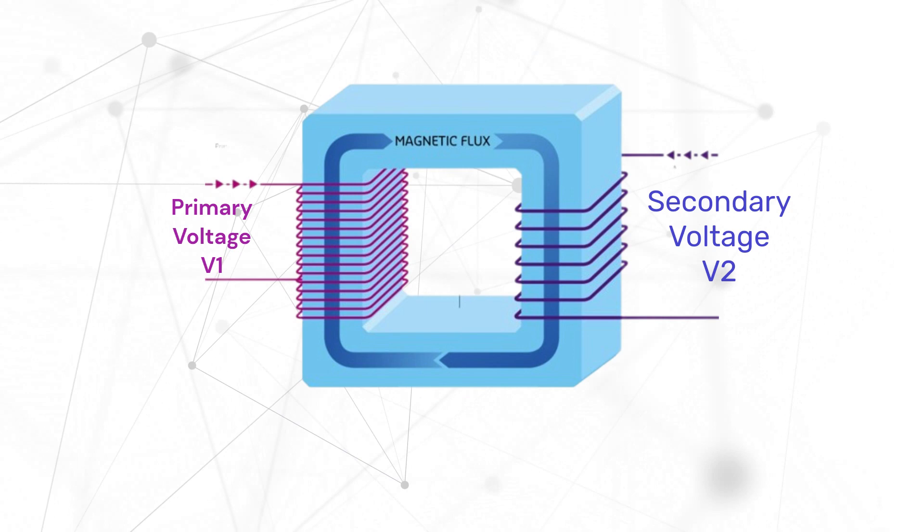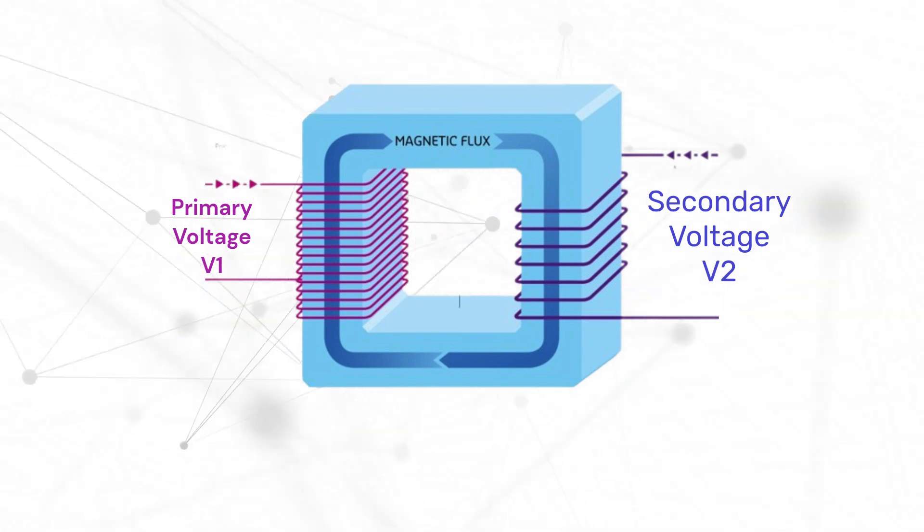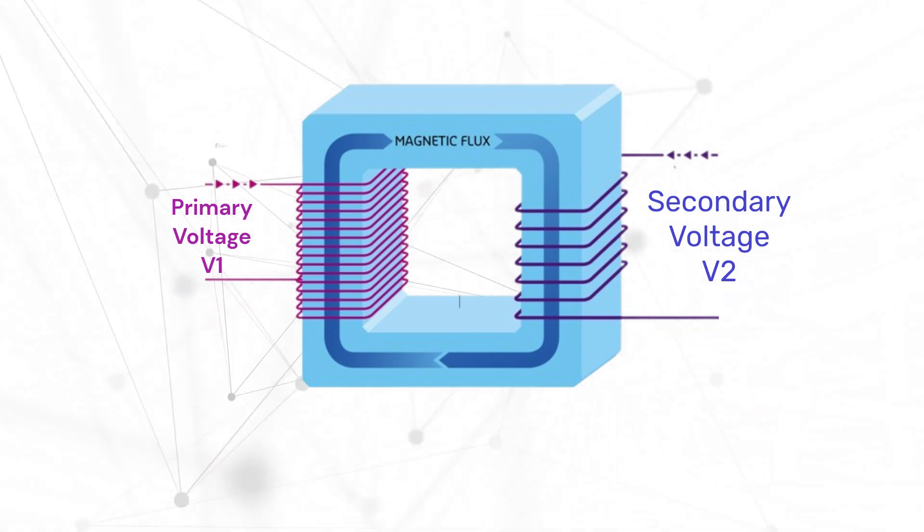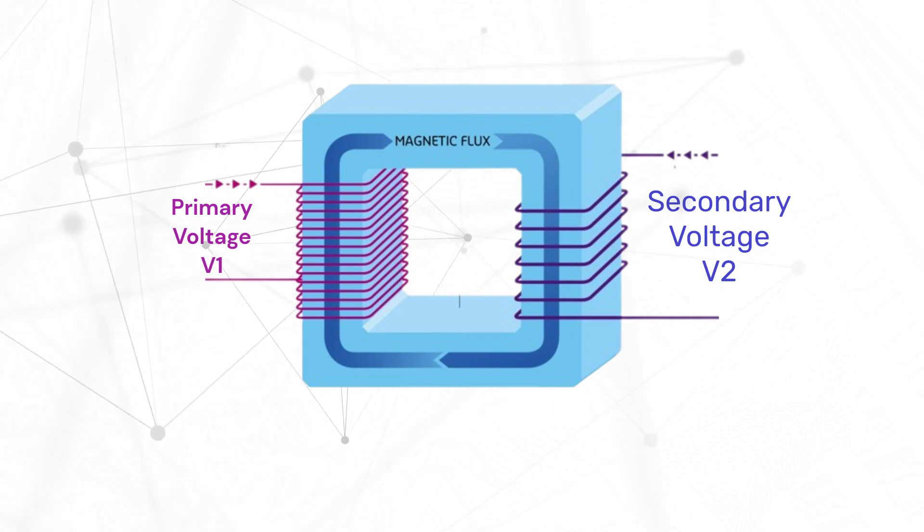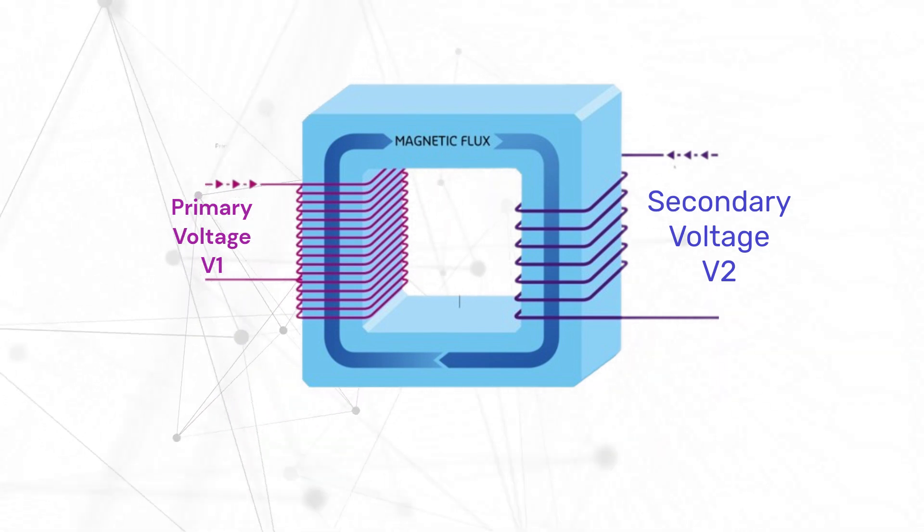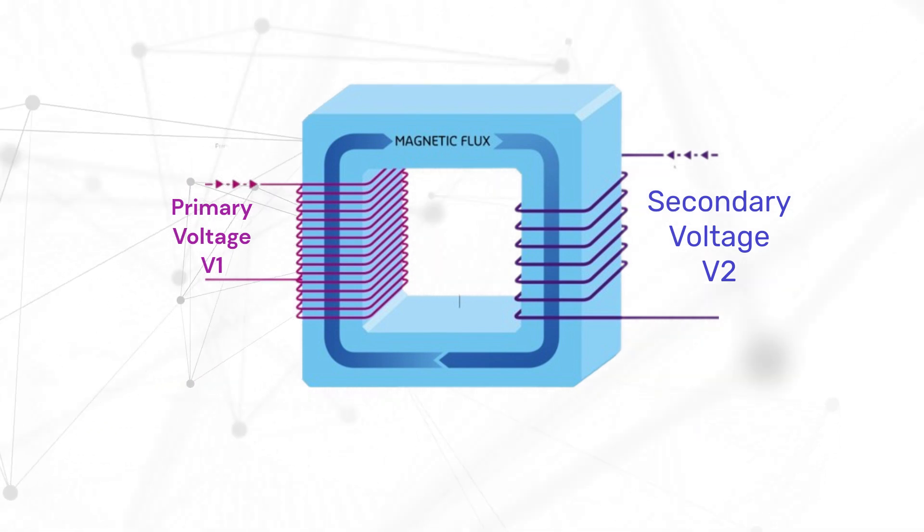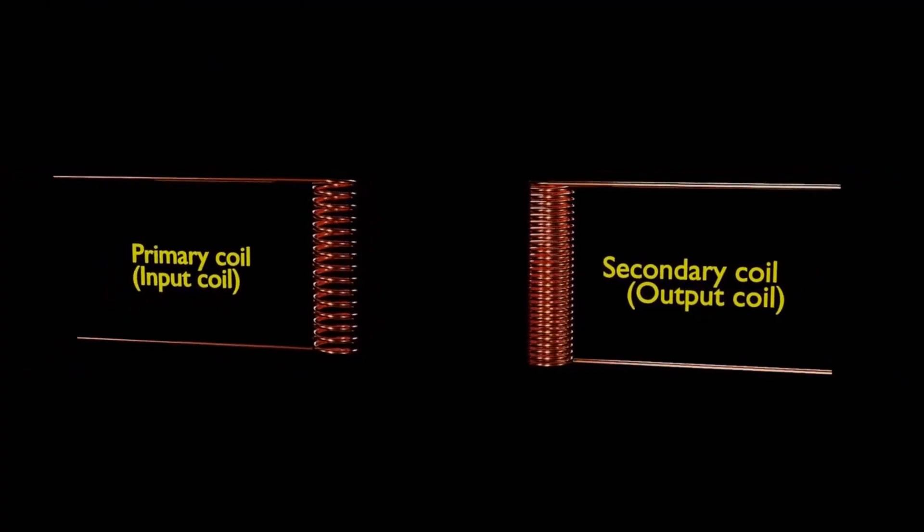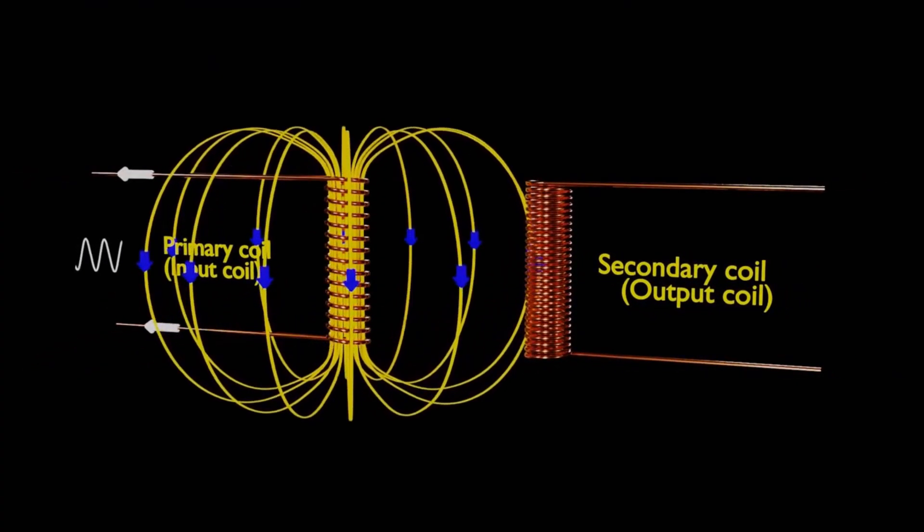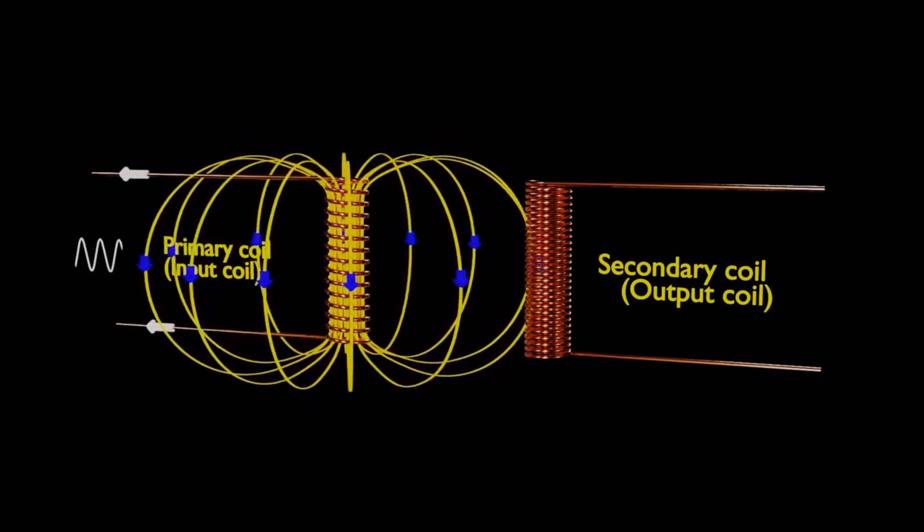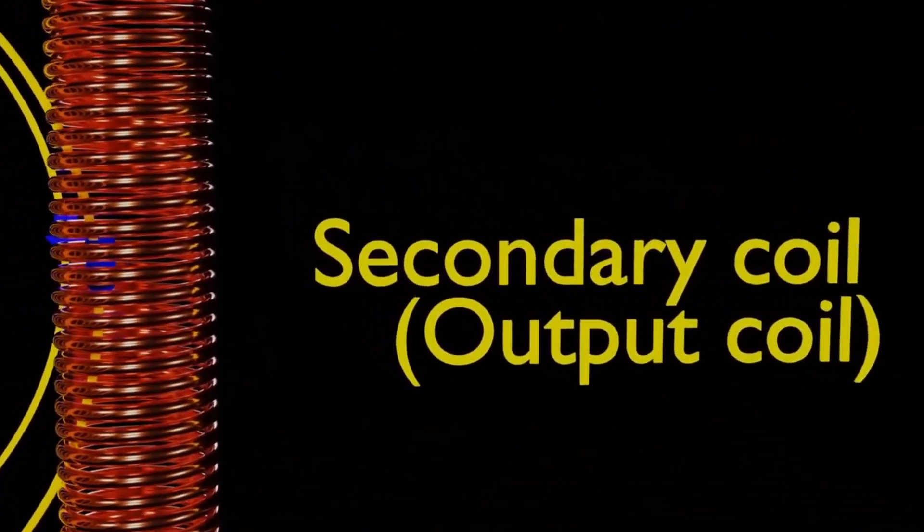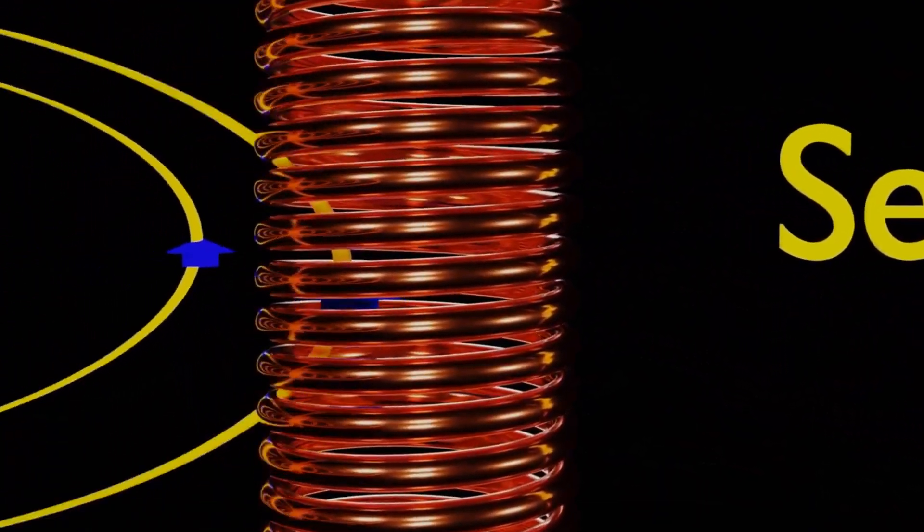First, let's lay the foundation by understanding what a transformer is. At its core, a transformer is an electrical device that transfers energy from one circuit to another through electromagnetic induction. Check out this simplified diagram. When alternating current (AC) flows through the primary coil, it creates a magnetic field. This magnetic field then induces a voltage in the secondary coil, thanks to electromagnetic induction.